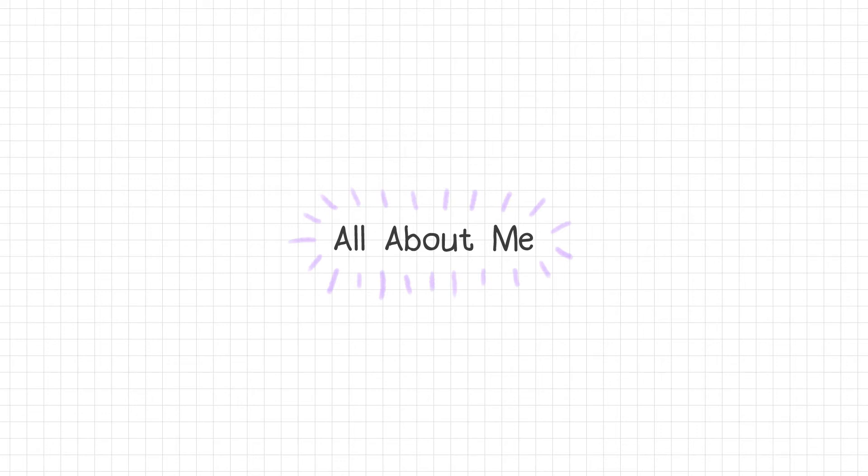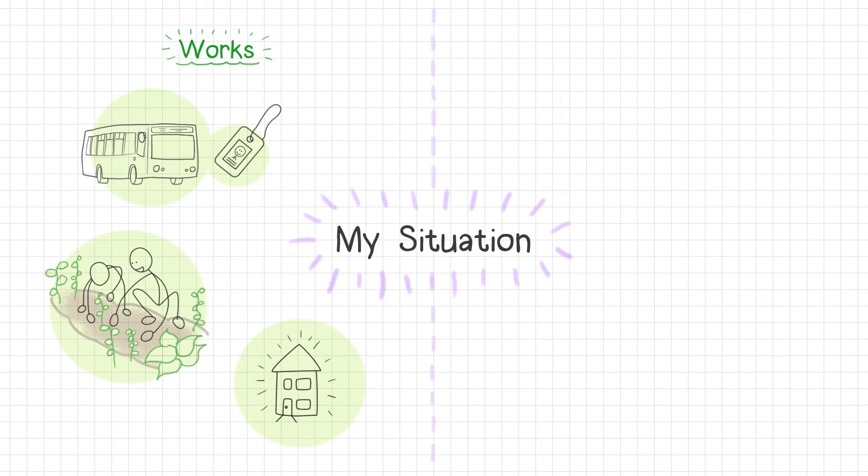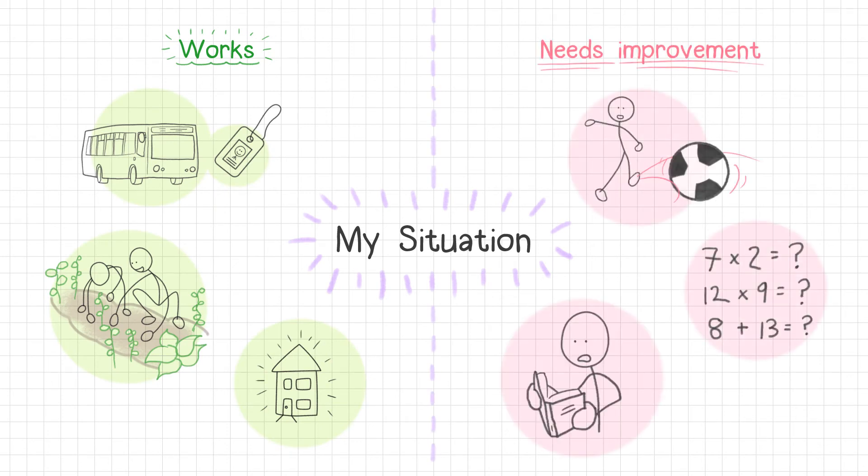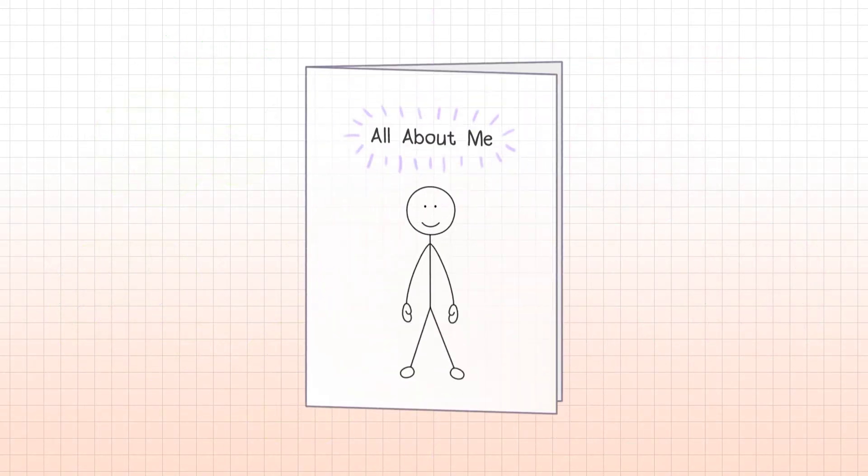The family will be asked to think what is working well in their situation, and what could be made better if support and resources were organised differently. These ideas will be included in the All About Me document.